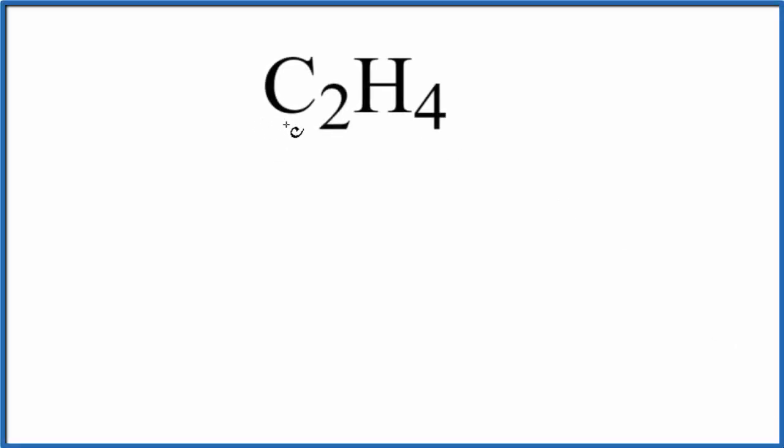In this video, we'll figure out the number of atoms in C2H4. This is called ethene. So let's write the elements down first. We have carbon, and then we have the hydrogen.